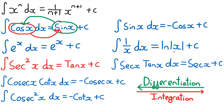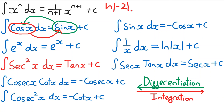We actually write this as the natural log of the modulus of x. The reason we add the modulus signs is that if we need to substitute something like x equals minus 2, without the modulus it would be the natural log of minus 2, and you can't have a log of a negative number. With modulus symbols, the natural log of |−2| simplifies to the natural log of 2, which we can do. So we add modulus symbols to avoid this problem when substituting negative values of x.